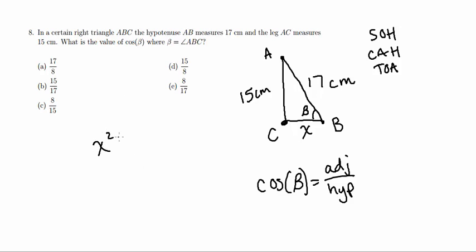So we're going to get X squared plus 15 squared is equal to 17 squared. Now we have X squared plus 225 is equal to 289. Now we subtract 225 from both sides, so we get X squared is equal to 64. Then we find that X is equal to 8.